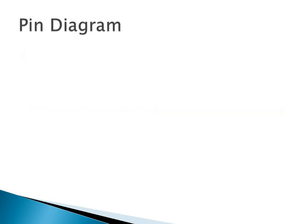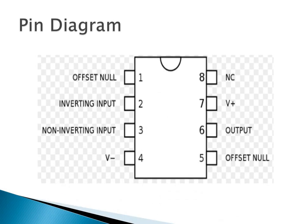Next, we are going to see the pin diagram of the operational amplifier. This is an 8-pin IC. The second and third pins are the input terminals, and pin 6 is the output terminal. Without supply voltage, no component performs well. The supply voltages are pin 4 and pin 7 — pin 4 is the negative supply voltage and pin 7 is the positive supply voltage.